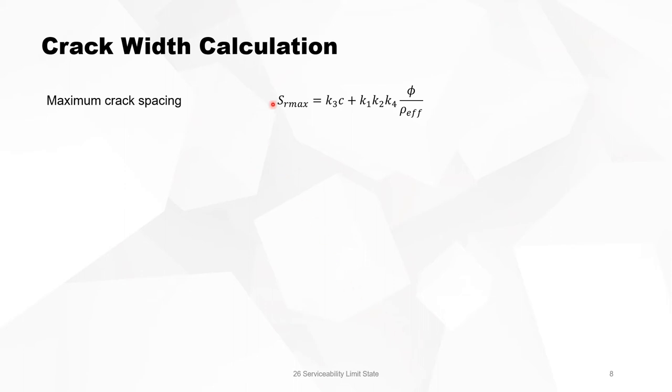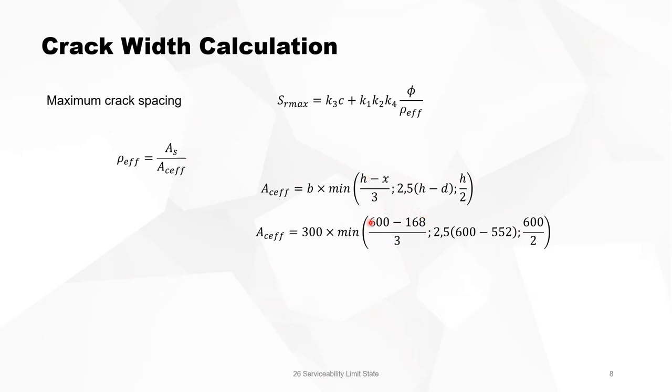The maximum crack spacing is given by this experimental formula. We start with calculating Ac effective. This is the width times the minimum of those three values. All those data are known. The minimum is 120 times 300, which is 36,000. So Ac effective is 36,000 square millimeters, and the effective reinforcement ratio is then 0.022.